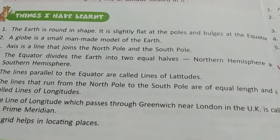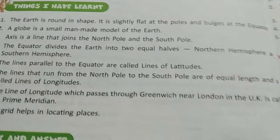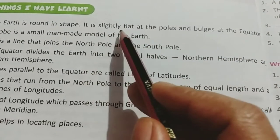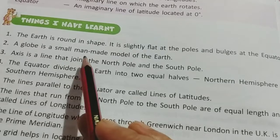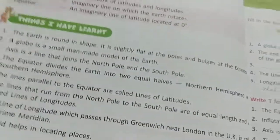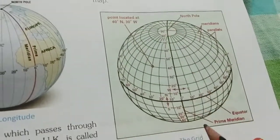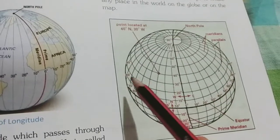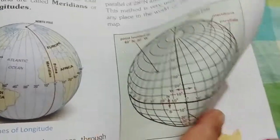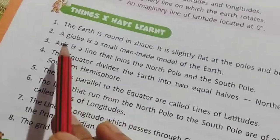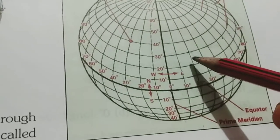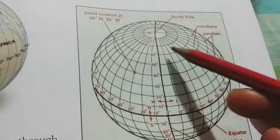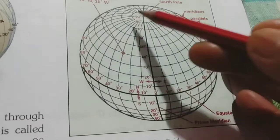Now let's review the important points of the Globe chapter. The earth is round in shape — it is slightly flat at the poles and bulged at the equator. A globe is a small man-made model of the earth. The axis is an imaginary line that joins the north pole and the south pole.